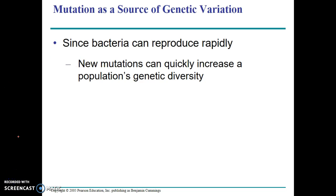As a side note, whenever the AP exam talks about genetic variation, all organisms can get genetic variation through mutation. It's the ultimate source of genetic variation — any change that occurs is really ultimately due at some point to a mutation.